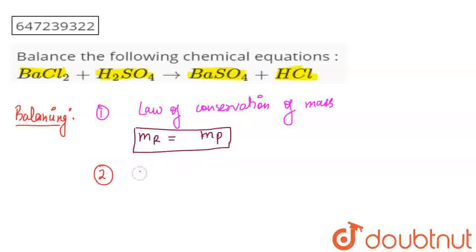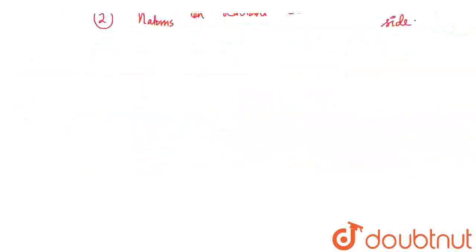The second condition is that the number of atoms on the reactant side is equal to the number of atoms on the product side. In a balanced chemical equation, the atoms are balanced. If the atoms are the same, the law of conservation of mass will automatically follow. So these two conditions are essential for the equation to be balanced.